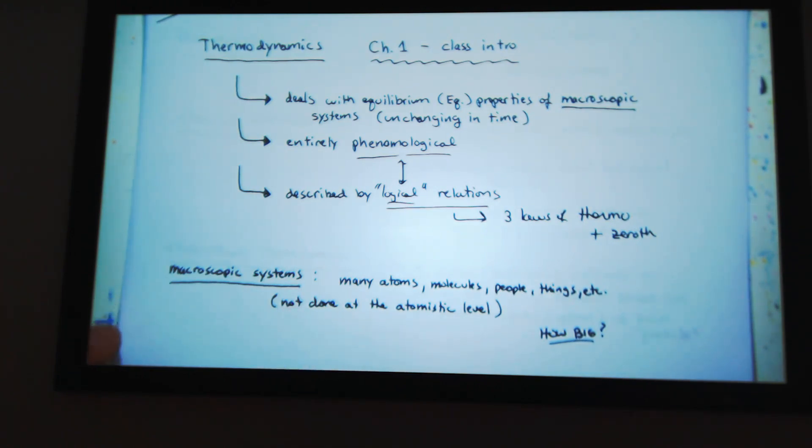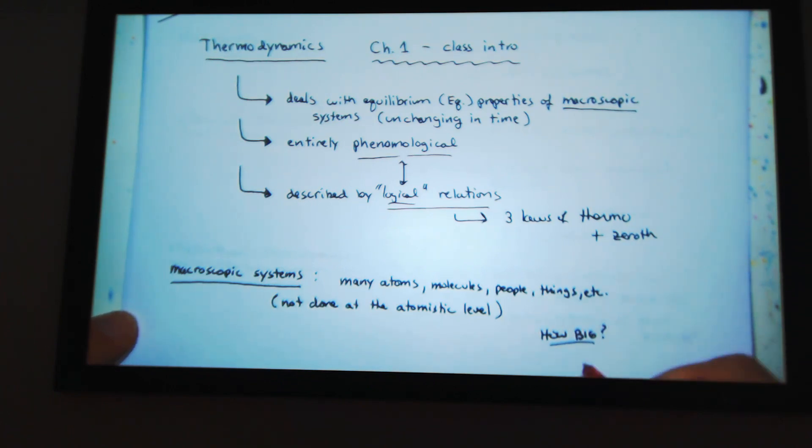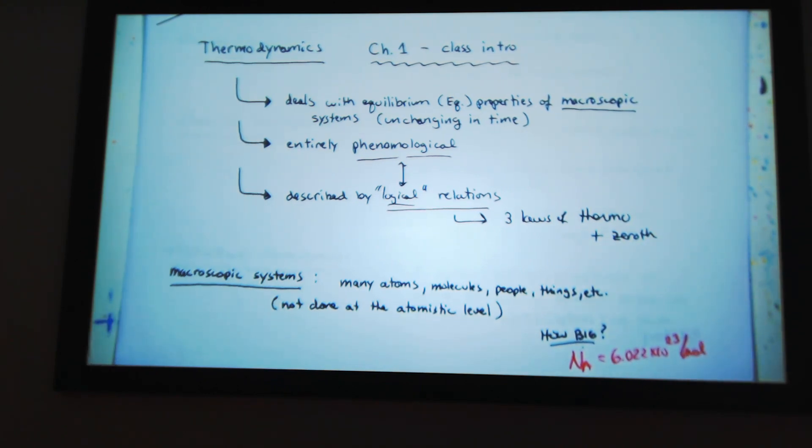Macroscopic systems, how big? I just said this in words. So I can take Avogadro's number equals 6.022 times 10 to the 23 per mole. So thermodynamics is not done at the atomic scale level. If I take a layer of atoms, graphene, thermodynamics doesn't consider a layer. It deals with macroscopic systems, gases, things that are big, Avogadro's number.